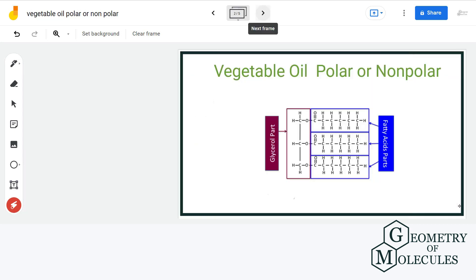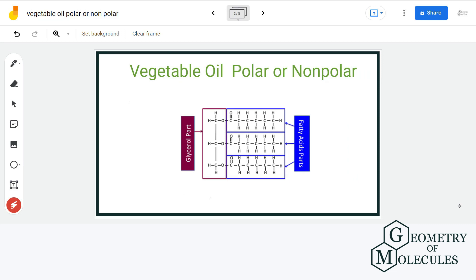So, this is the structure of vegetable oil and it is divided into two parts. First is the fatty acid part that has 14 or more carbon atoms and is hydrophobic in nature because of the carbon and hydrogen part of this chain, and the glycerol part that is slightly hydrophilic in nature.